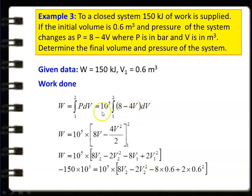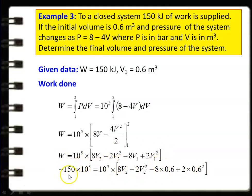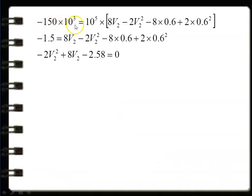Integrating: 8V − 4V²/2 from 1 to 2 gives 10⁵ × [8V2 − 2V2² − 8V1 + 2V1²]. Substituting the values with V1 = 0.6, the work done equals −115 × 10³ J. So: −115 × 10³ = 10⁵ × [8V2 − 2V2² − 8(0.6) + 2(0.6)²]. Simplifying, we get a quadratic equation in V2: −2V2² + 8V2 − 2.58 = 0.